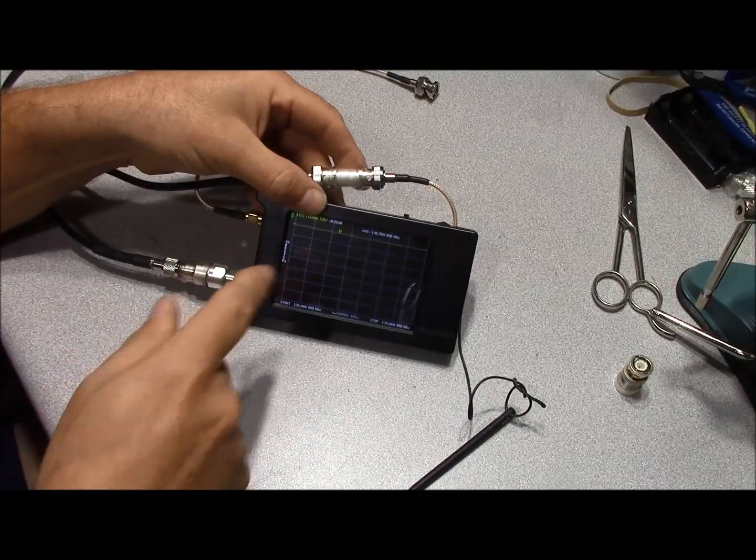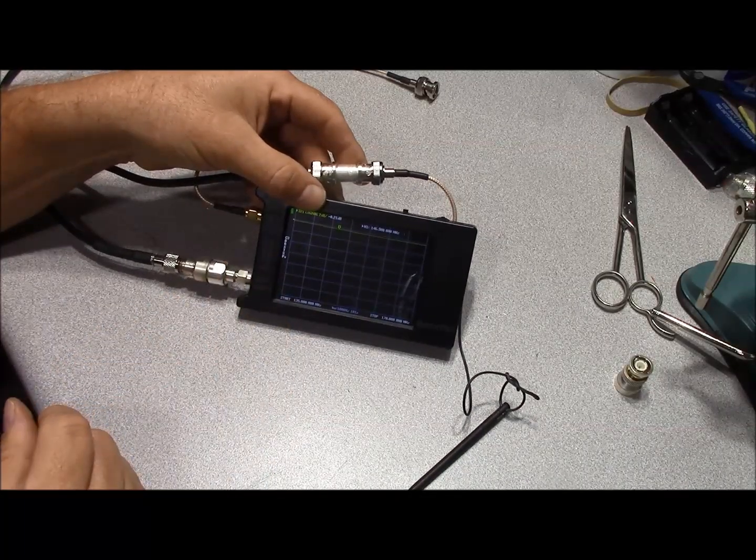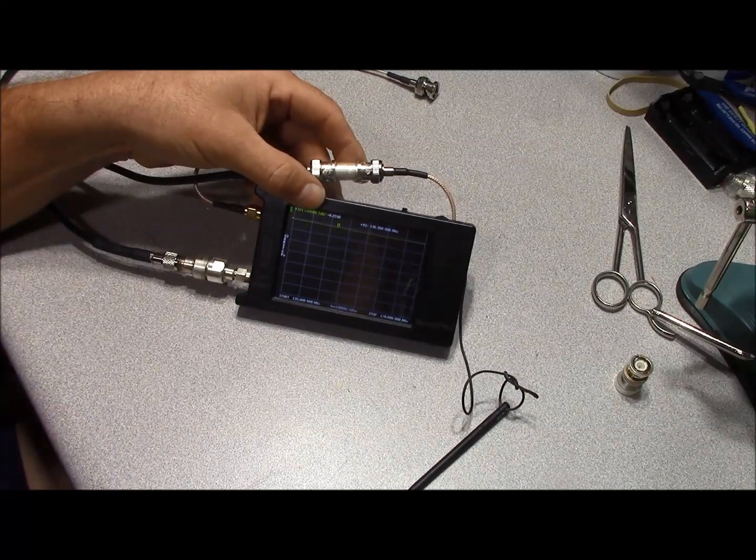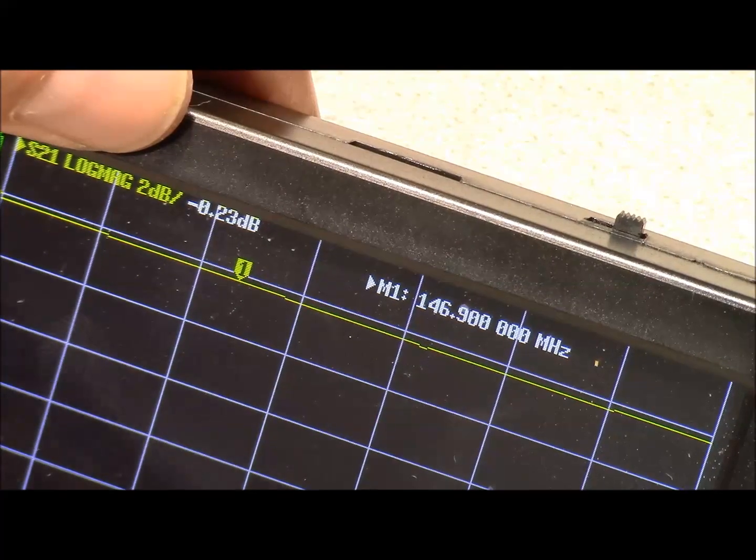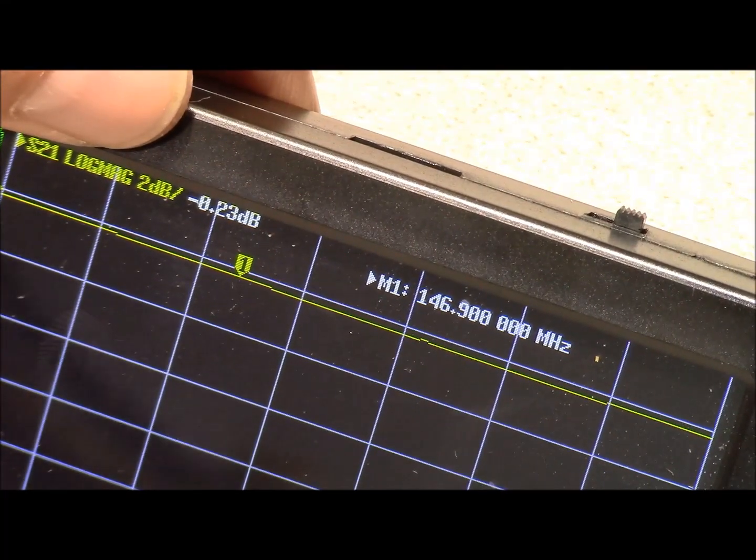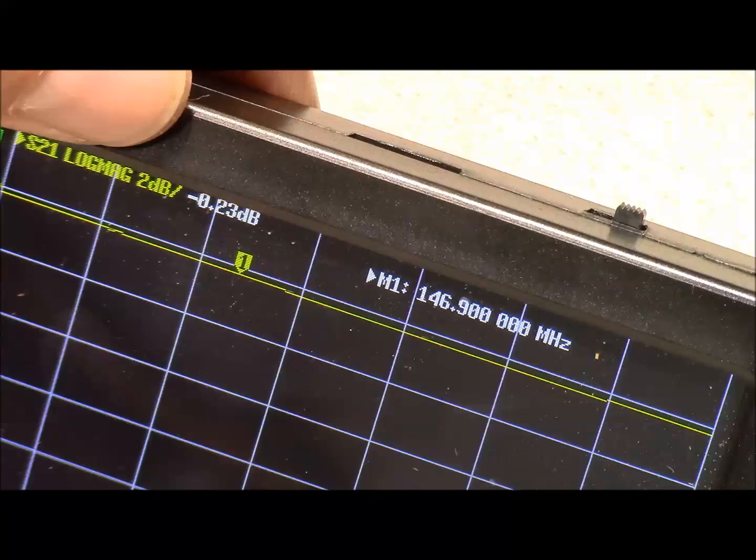Another excellent tool to check your work is something like an inexpensive nano VNA such as this. And we can see the loss shown here of a little over two tenths of a dB at VHF. For this jumper, that's to be anticipated.